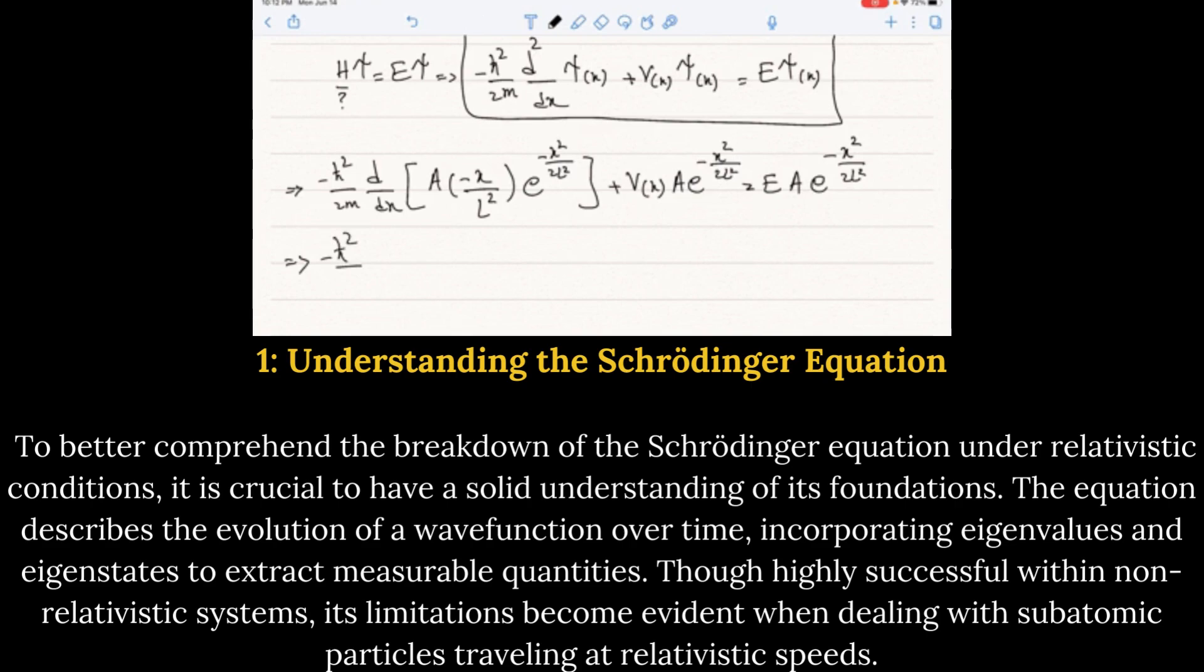The equation describes the evolution of a wave function over time, incorporating eigenvalues and eigenstates to extract measurable quantities. Though highly successful within non-relativistic systems, its limitations become evident when dealing with subatomic particles traveling at relativistic speeds.